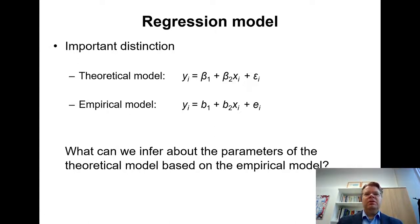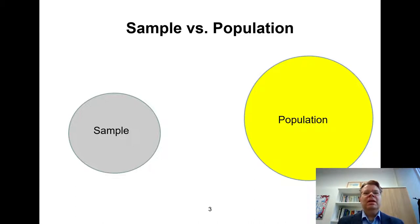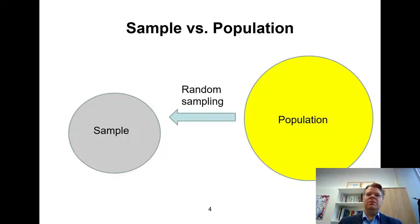Let me go back a couple of steps to introductory statistics. Some of this is familiar, but it's useful to get a quick reminder. The distinction between sample and population should be clear. The idea is that we apply some kind of random sampling to obtain our observed data from some larger population.